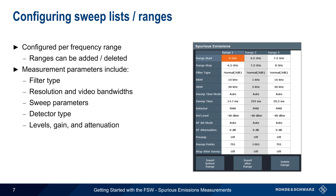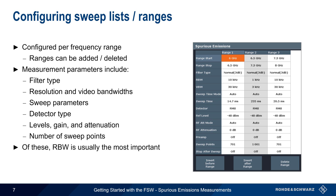Settings for reference level, attenuation, and the preamplifier should also be adjusted as needed. The number of sweep points and the behavior at the end of each sweep can also be adjusted. The number of sweep points is often set higher in ranges where higher resolution or detail is needed. Note that of all these parameters, resolution bandwidth is usually the most important, since it represents a trade-off between a lower noise floor and a longer sweep or overall measurement time.